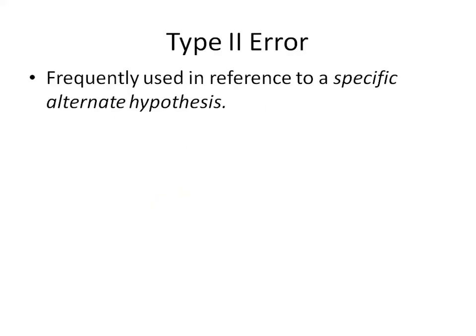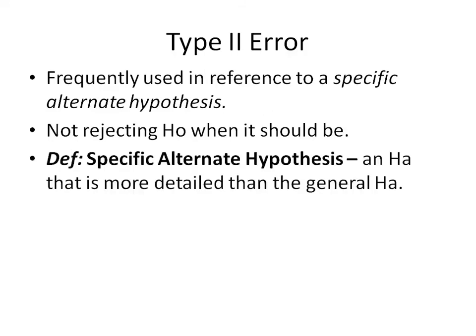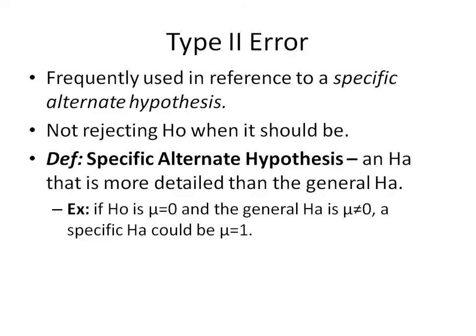With type 2 error, type 2 error is frequently used in reference to a specific alternate hypothesis. Up to this point, we'd only been considering alternate hypotheses, but it can be broken down even more into what's called specific alternate hypotheses. Type 2 error, just to hammer the point home, is not rejecting the null hypothesis when it should be rejected. A specific alternate hypothesis is an alternate hypothesis that's more detailed than the general alternate hypothesis, kind of like a subset of it.